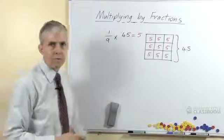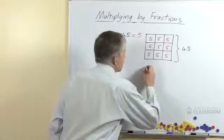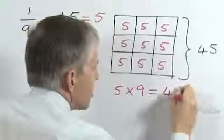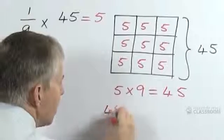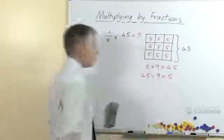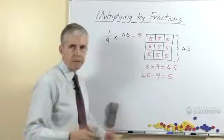So if we have 1/9 of 45, it's the same as dividing by 9, and there's our answer. We can relate this back to the number facts, the times tables the students have done: 5 nines are 45. We can turn all of that around and look at the related number facts: 45 divided by 9 is 5, 1/9 of 45 is 5.